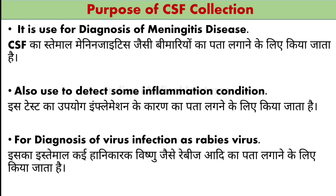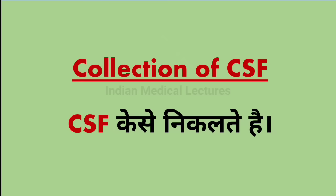Remember, rabies virus can be found in the saliva of dogs, cats, or rabbits. This virus can destroy our brain cells. So we need to do CSF collection, and through CSF collection, we can determine whether there is a rabies infection present.